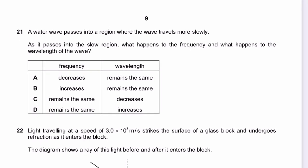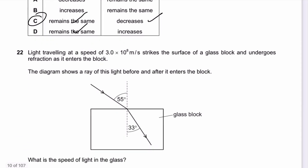Question 21: A water wave passes into a region where it travels more slowly. Using v = fλ: velocity decreases. Frequency only changes when the source changes — since the source is not changing here, frequency remains constant. Since velocity and wavelength are directly proportional, if velocity decreases, wavelength decreases too. The answer for question 21 is C.